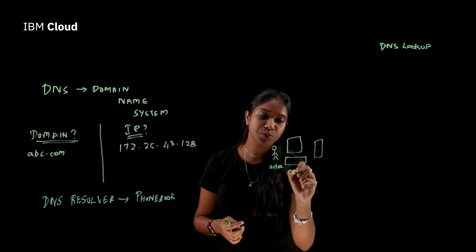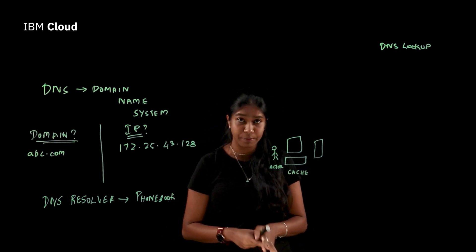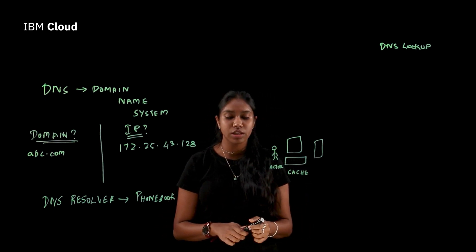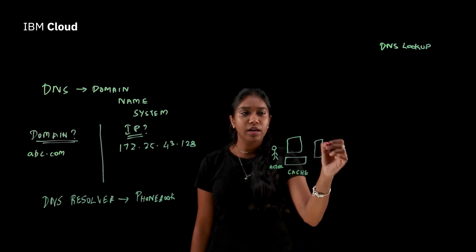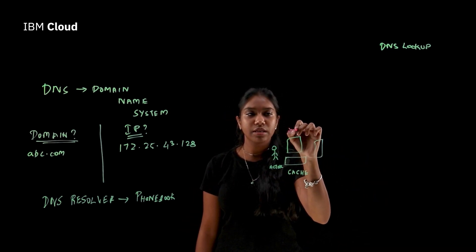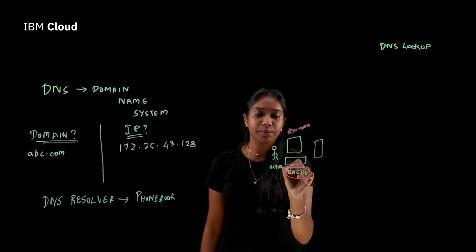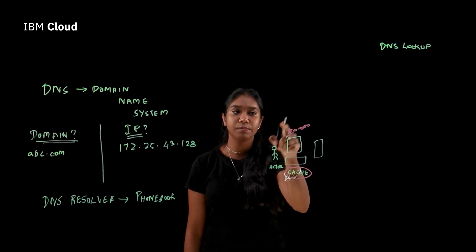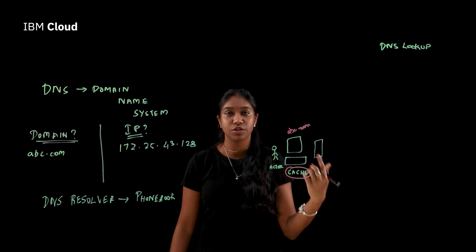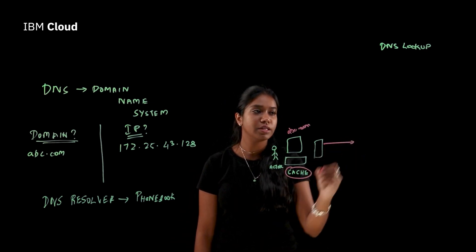So the web browser has what we call the cache memory. The cache memory stores certain values for a certain period of time. So when you enter the address abc.com, what happens is it looks in the cache memory first. And when it says, I don't have the IP address of the particular website that you're looking for, we forward the request to the main DNS resolver.